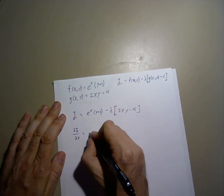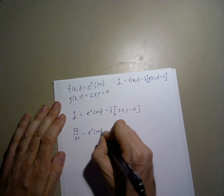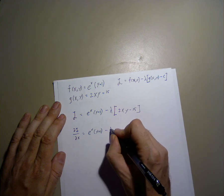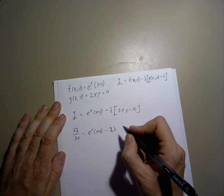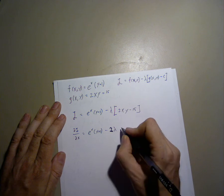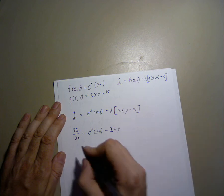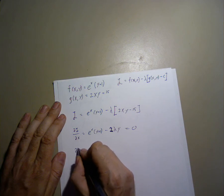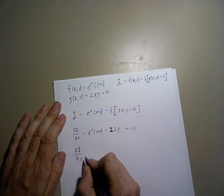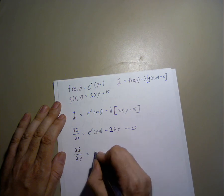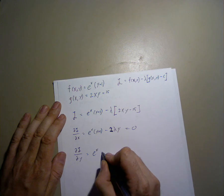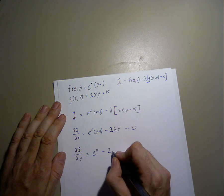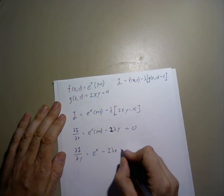This gives us e to the xy plus 1, minus 2 lambda y. This gives us e to the x minus 2 lambda x equals 0. The next partial derivative, l with respect to y gives us e to the x minus 2 lambda x equals 0.